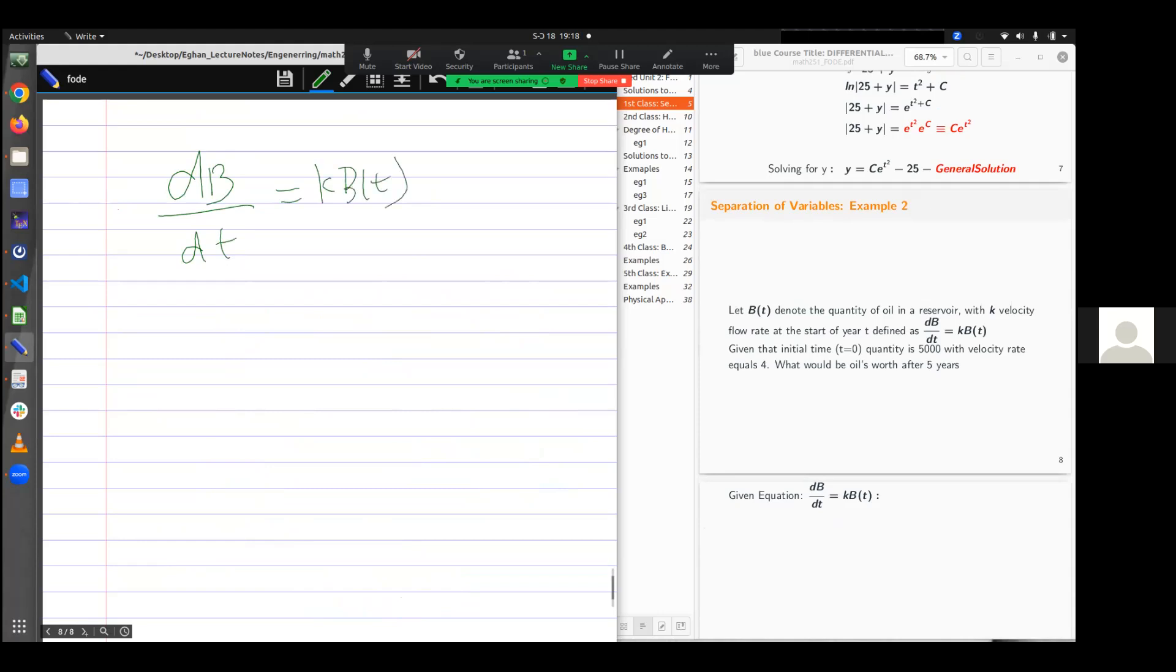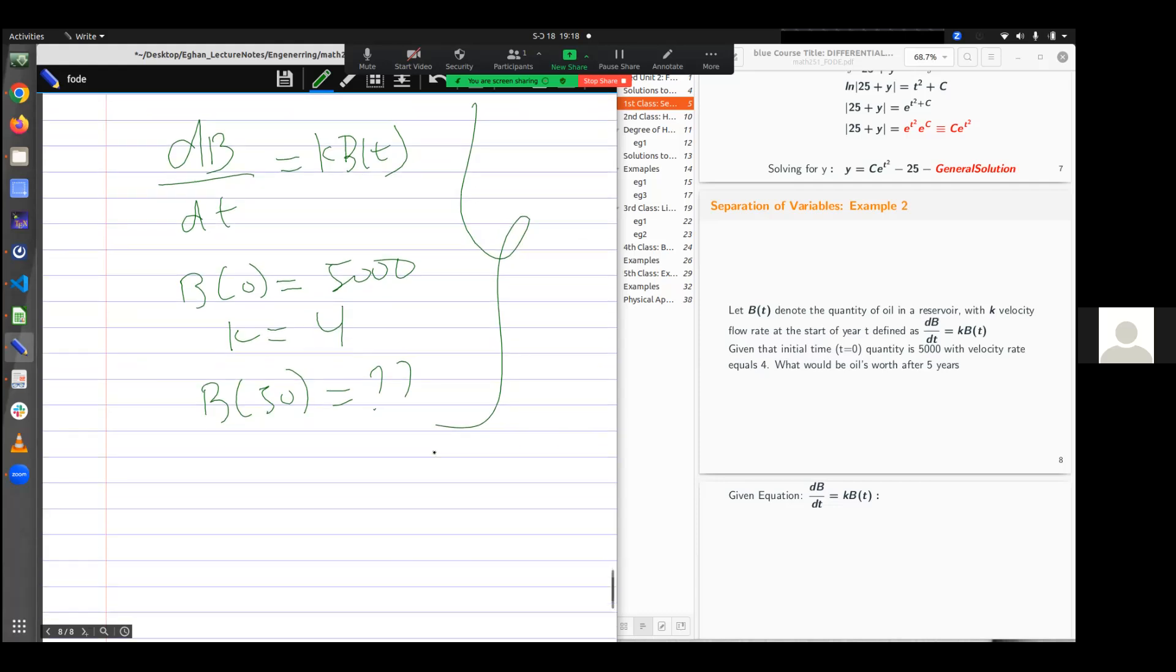Given that at initial quantity, it means that b at 0, our oil is 5,000 with k giving us 4. What is b at 50 years? That is what we are supposed to solve here. But I wouldn't solve for b at 50 years. I want to check if this is separable or not. This is a first order differential equation. This is so straightforward.